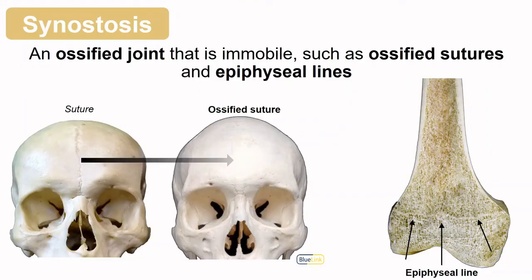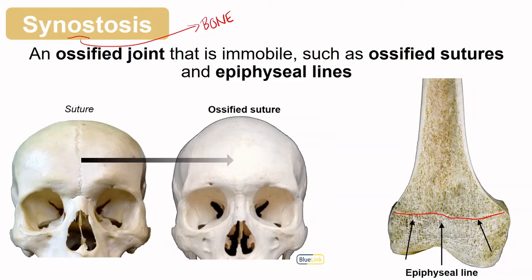With development and age, some joints ossify, and these ossified joints are called synostosis — the letters 'os' referring to bone. Bone is holding together bone, with no fibrous or cartilaginous structures involved. One example is the epiphyseal plates: as they close or ossify, they change from a synchondrosis to a synostosis, leaving that line. Sutures may also ossify with age — what was once a suture can have the bones fully fuse together, which is also known as a synostosis.